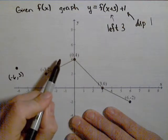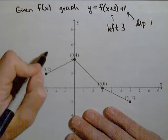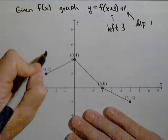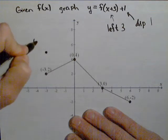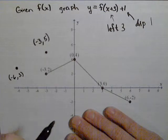The point 0, 4, if we move it left 3, it's going to go to negative 3 and up 1. So it's going to be the point negative 3, 5. And we're just going to do that with all our points.